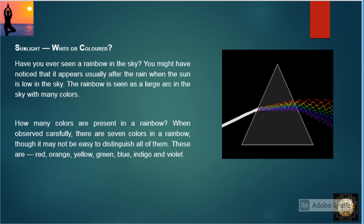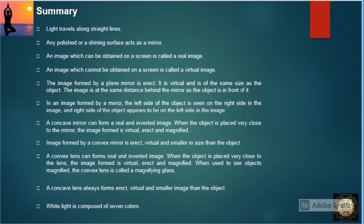How many colors are present in a rainbow? When observed carefully, there are seven colors in a rainbow, though it may not be easy to distinguish all of them. These are red, orange, yellow, green, blue, indigo, and violet. So we can conclude that white light is composed of seven colors.